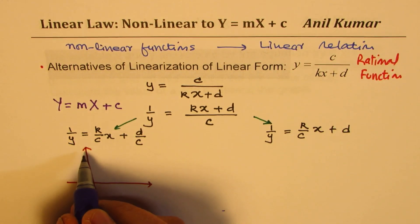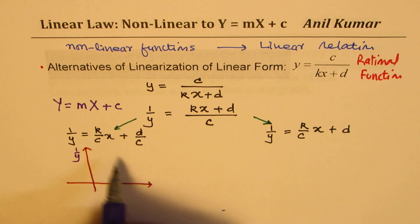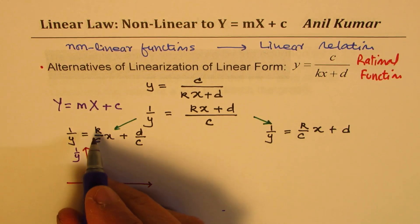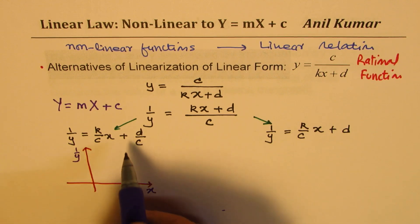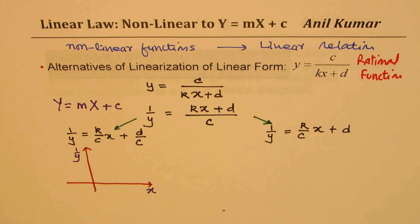So, on that vertical axis, if I take 1 over y, and on the horizontal axis, if I take just x, we could have now a straight line here. So, I could draw a straight line in this case.